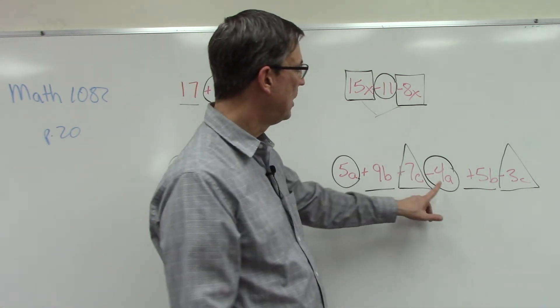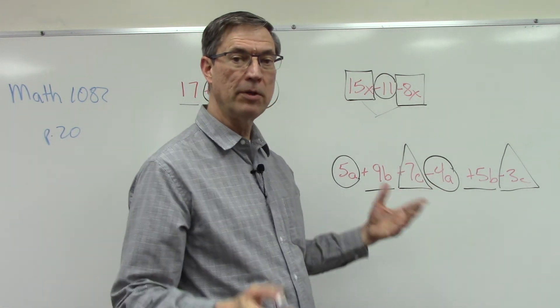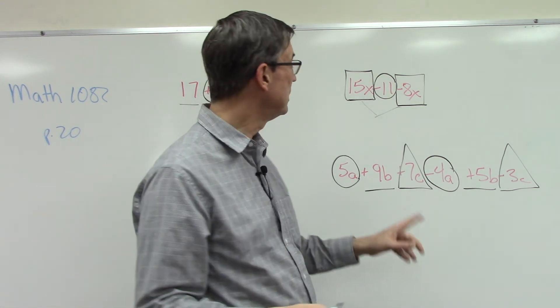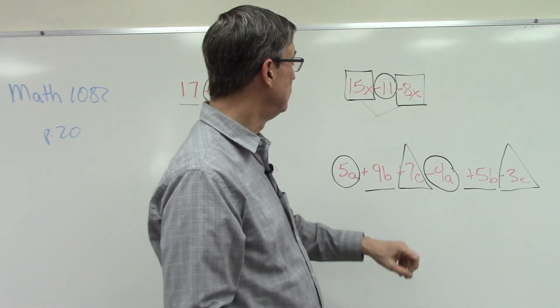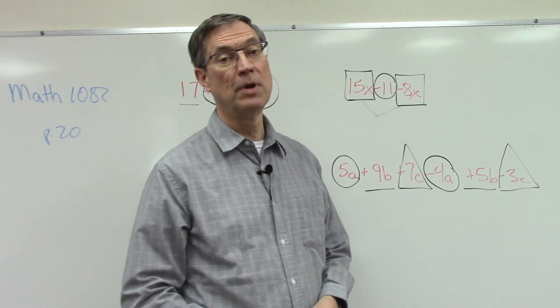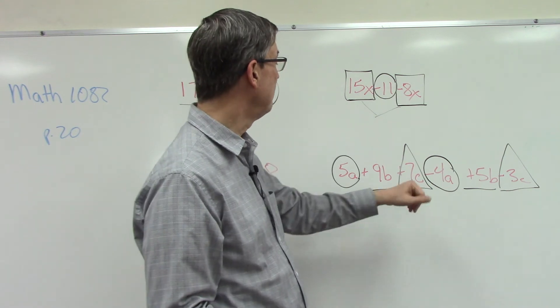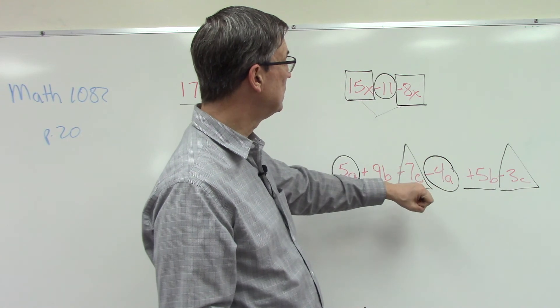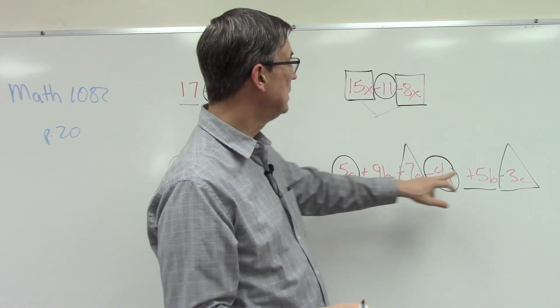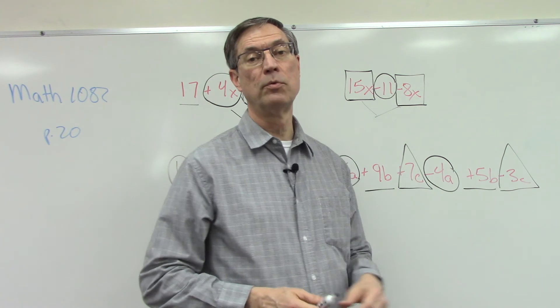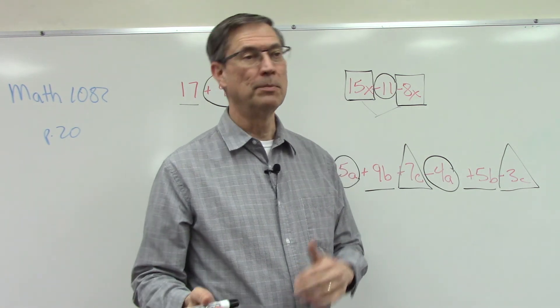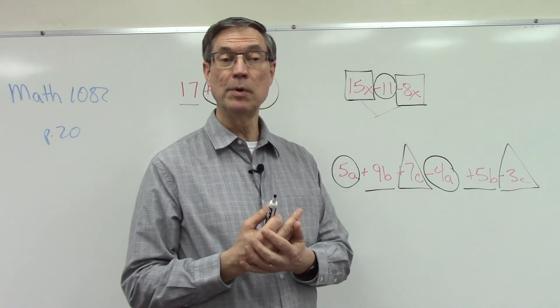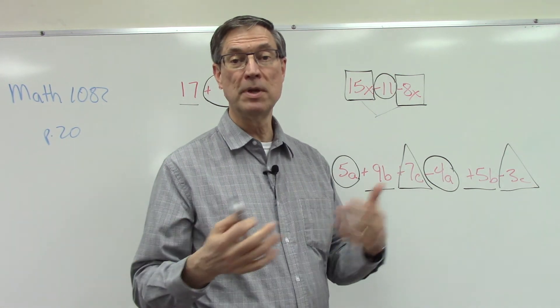So we can put 5a and negative 4a together. So think about the rules for adding: when the signs are different, subtract the smaller from the larger, keep the sign of the larger. Do the same for the 'b' terms. Those both happen to be positive numbers, so that's easy: just 9 plus 5, keep the 'b' with it. It's not b squared, just b. And then finally we're going to do 'c'. So we have 7c and negative 3c, so we'll subtract the smaller from the larger, keep the sign of the larger, and just tack the letter on.